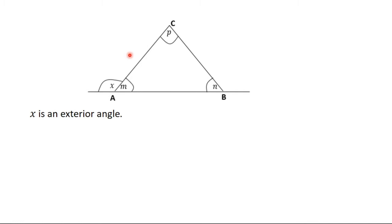P and N are called interior opposite angles of X. M is the interior angle adjacent to X on the straight line, while P and N are opposite to M inside the triangle. So we say that P and N are the interior opposite angles of the exterior angle X — because if you consider X's position, the angles opposite to it inside the triangle are P and N.